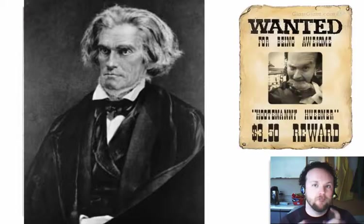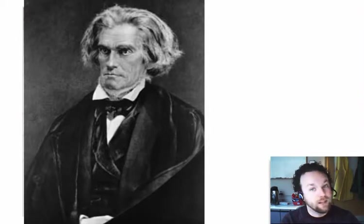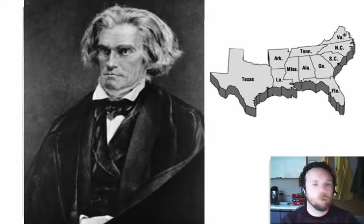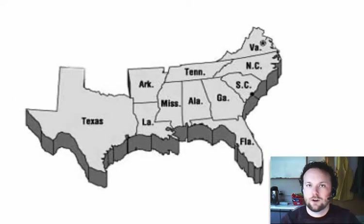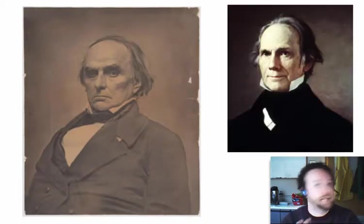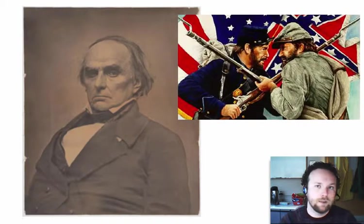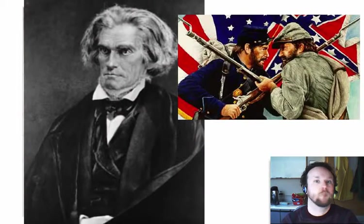Calhoun also demanded that fugitive slaves — or runaway slaves — be returned to their owners because, technically, they were the property of their owners. If the North wouldn't agree to these terms, Calhoun stated that the South was 'more than willing to use force to leave the Union.' The Southern approach was clear: slavery should be allowed in the territories, and if not, many Southern states were willing to leave and start their own country. Next up to speak was Daniel Webster of Massachusetts, who agreed with Clay that the country needed to stay intact and believed that if the South were to secede, it could not be done peacefully, noting that Calhoun had said the South was willing to use force.